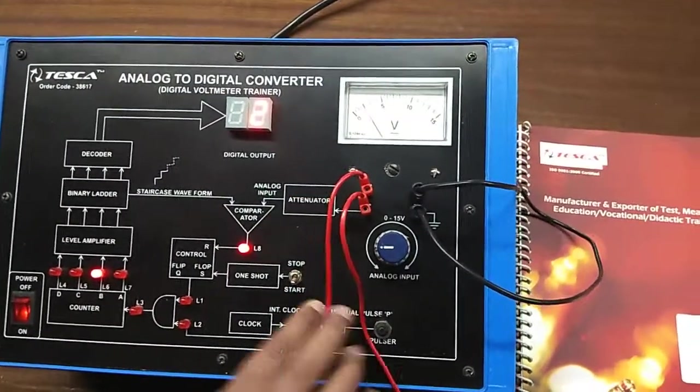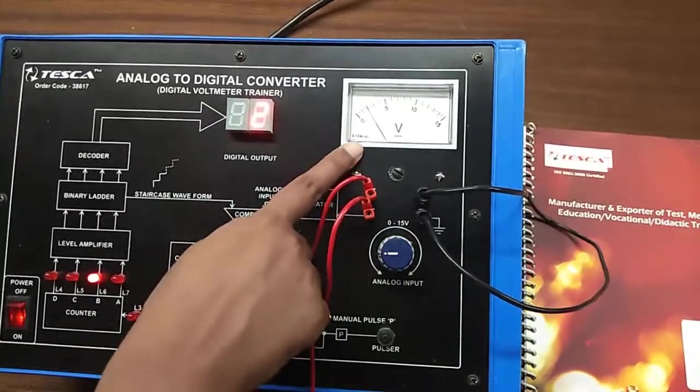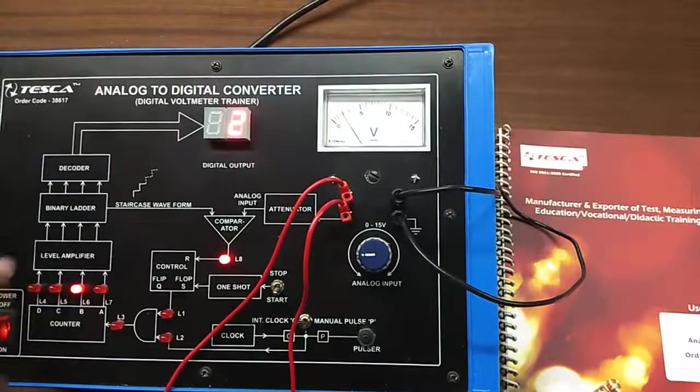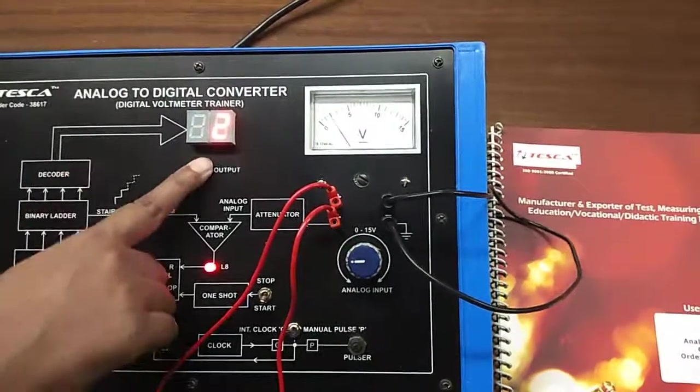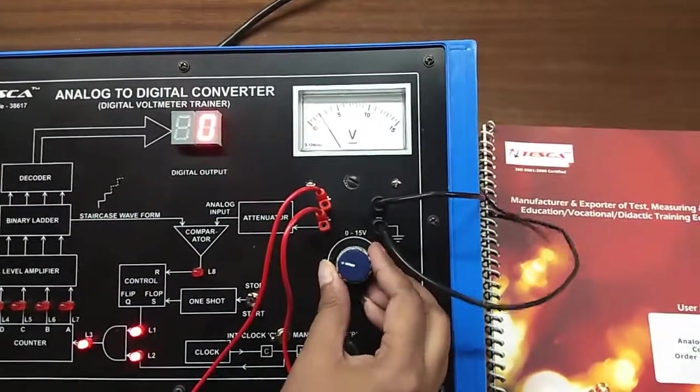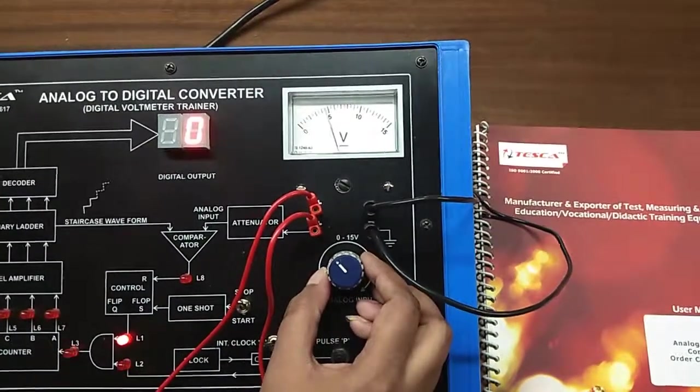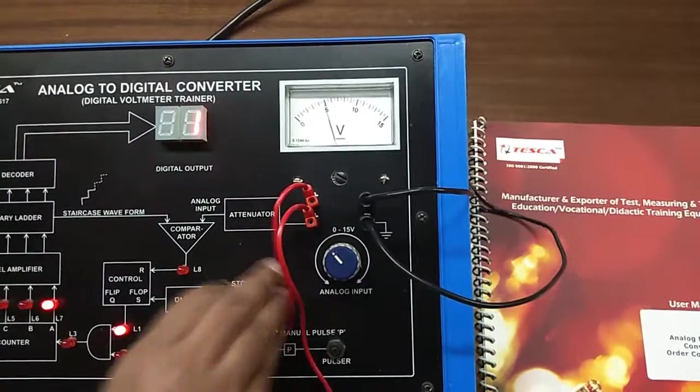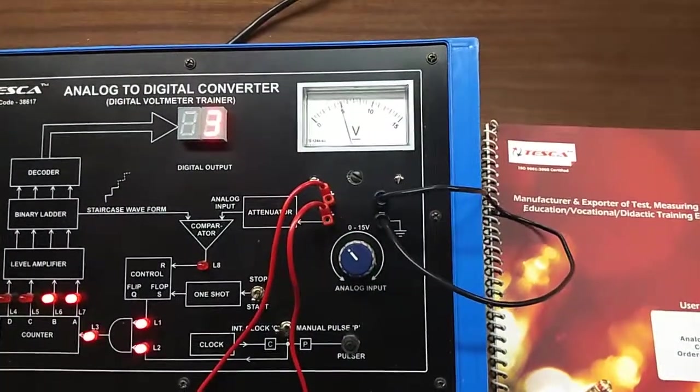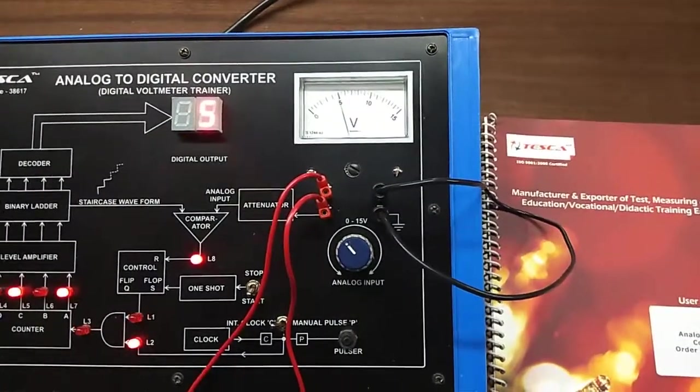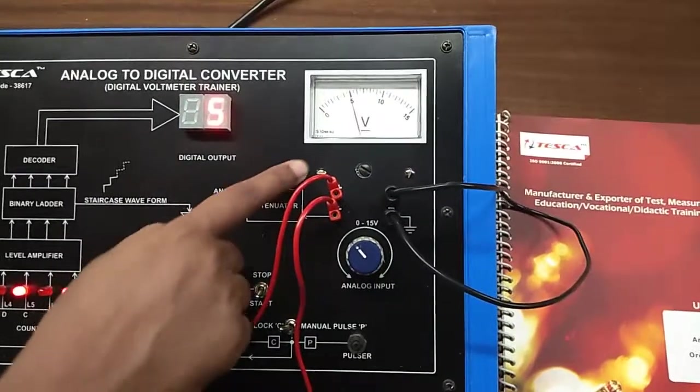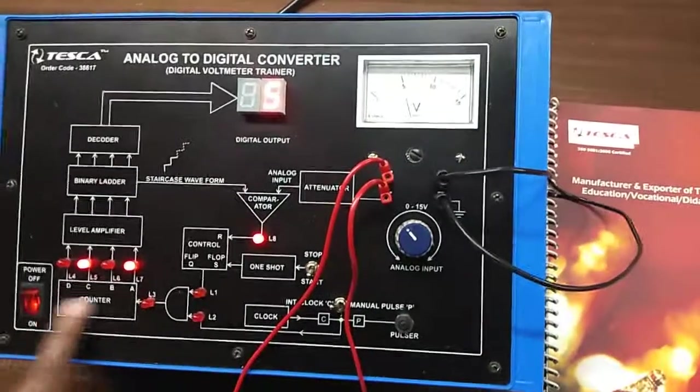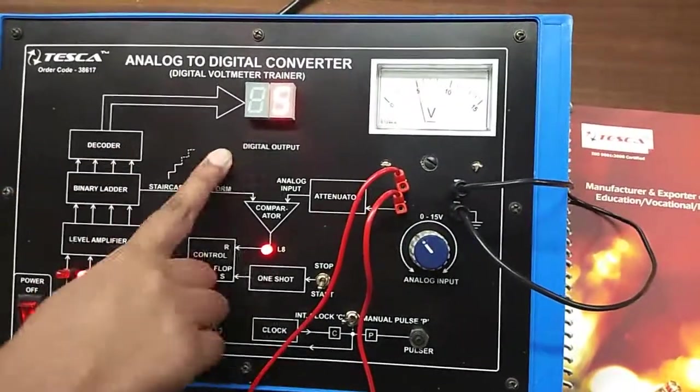The switch is in start position and my voltage is at 2. This is the digital conversion with the result showing here. Again, I will select the voltage here. You can see as I have set it at 5, this is the digital conversion of 5 with the result showing here.